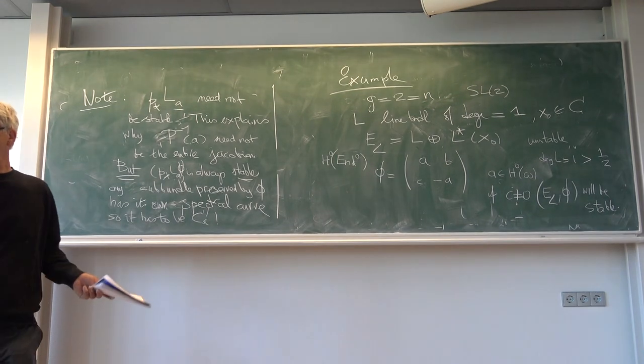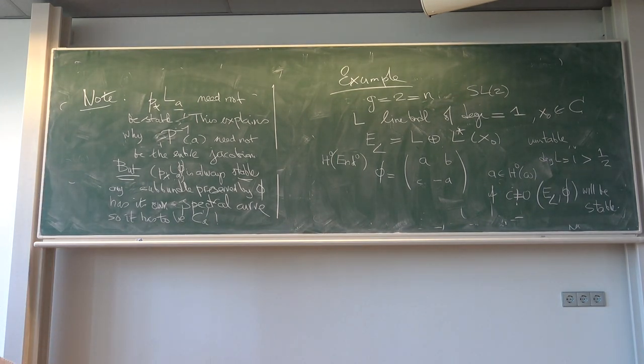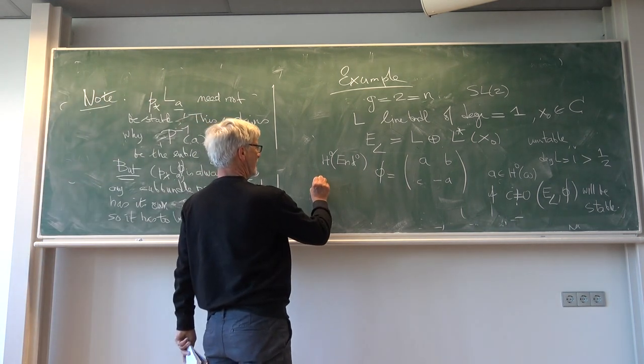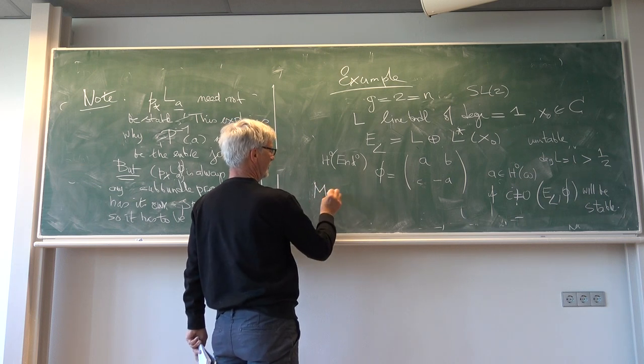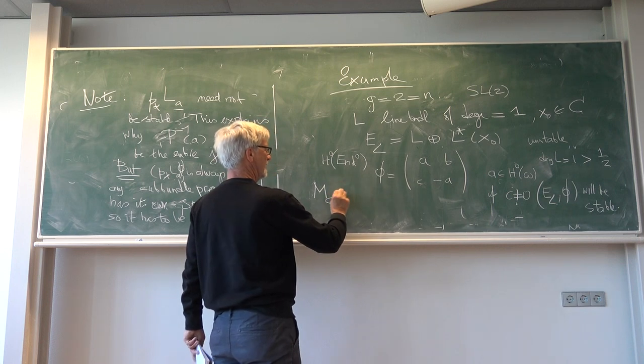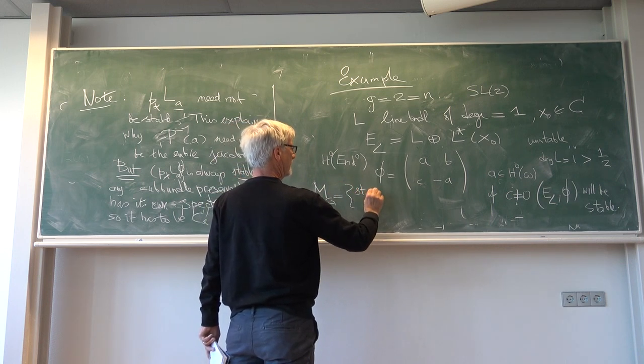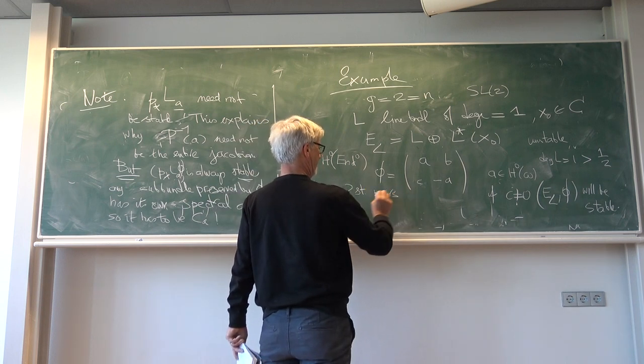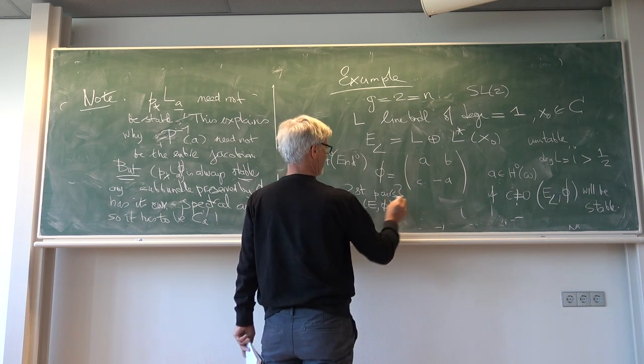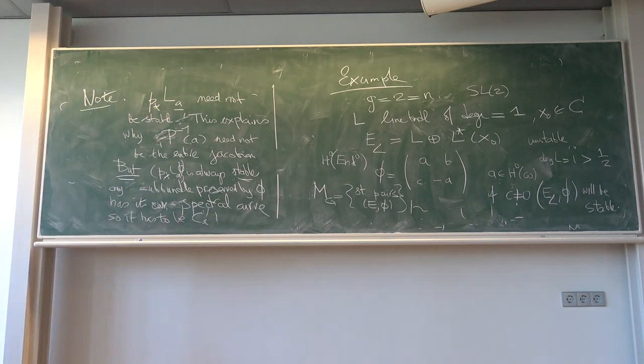And what Hitchin does, he makes certain calculations from which he concludes that in the rank 2 case, the bad locus, so the locus in the moduli space, which I have not spoken about, but if you take the moduli space Mg, which is the moduli space of stable pairs, when you know equivalents, then in this moduli space, the things that come from stable vector bundles, they form an open center with complement of co-dimension 2.